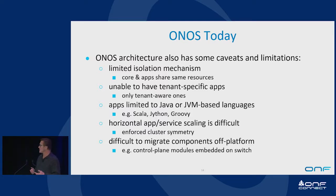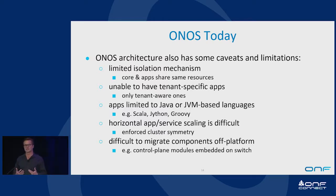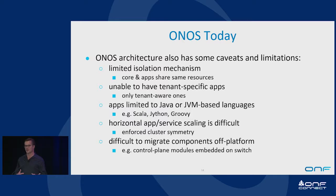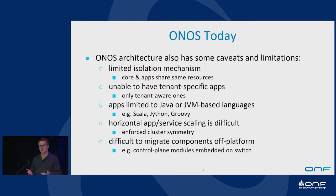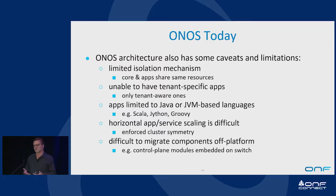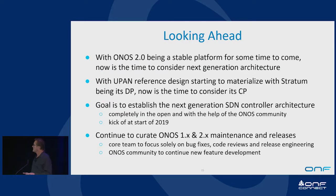We can do better, especially in the context of the fact that we realize we can move more into a prescriptive world where pipelines can be prescribed and the operation of the data plane can be more dictated. We can actually jettison some of the complexity built up in trying to adapt to the world and simplify. Looking at some aspects of the current ONOS architecture, there are limitations — for example, a limited isolation mechanism which impacts our ability to have tenant-specific applications and horizontal service scaling. Also, a lot of software was developed that in retrospect ended up not being used.